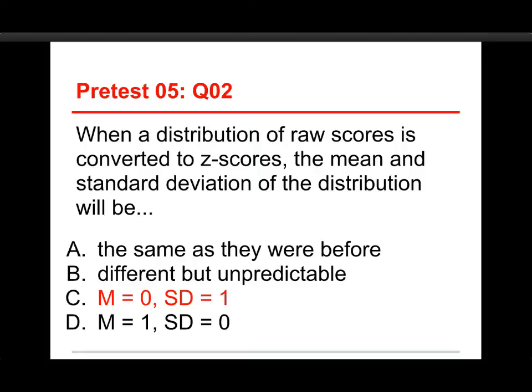Now, the same as they were before is true for the shape of the distribution when it's converted, but it's not true for the statistics, because those have to do with the way the numbers are written across the bottom. Different but unpredictable? No, they're very predictable. And that bottom one, mean of 1 and a standard deviation of 0, if it had a standard deviation of 0, that would mean that every score was exactly the same. There'd be no variation whatsoever, and that's not the case.